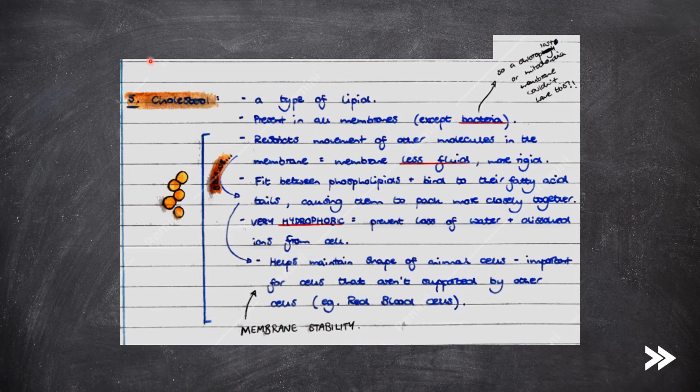So finally, we have cholesterol, which is a type of lipid. Cholesterol is present in all cell membranes except for those of bacteria. Cholesterol restricts the movement of other molecules in the membrane, which means that the membrane is less fluid and more rigid. This is because they can fit between the phospholipids and they bind to their fatty acid hydrocarbon tails, causing them to pack more closely together. This helps maintain the shape of animal cells, which is very important for cells that aren't supported by other cells, such as red blood cells.